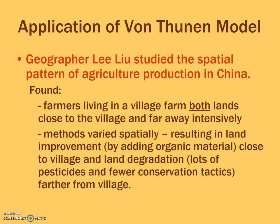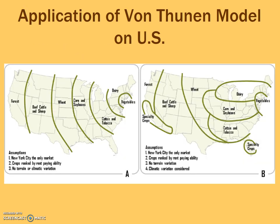Li Lu specifically discusses this in China, where more organically and carefully grown products are still found closer to the village, while further away there may be more pesticides and herbicides used in extensive agriculture. We can also apply Von Thunen's model on a country scale — if New York City is the central market, areas of the country are still devoted to particular agricultural activities, and while not in exactly the same order, the principle still applies in terms of what regions grow certain agricultural products.